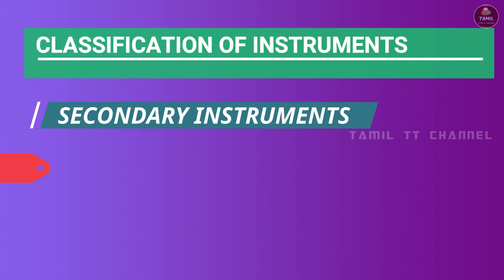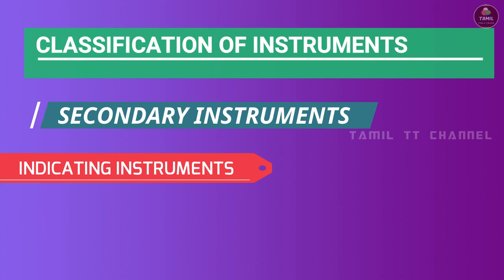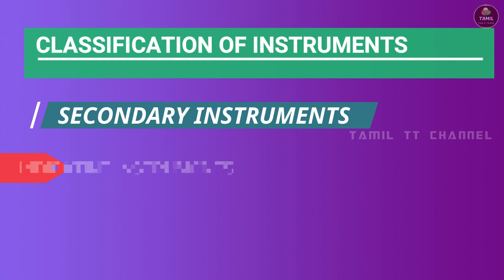First, indicating instruments. Indicating instruments show the reading when the circuit is connected. For example, voltmeter and wattmeter are indicating instruments.